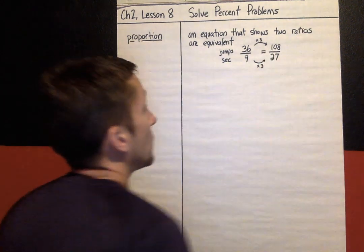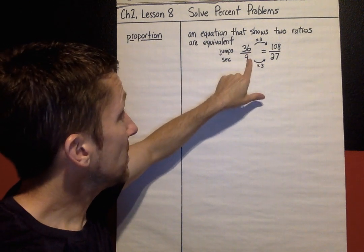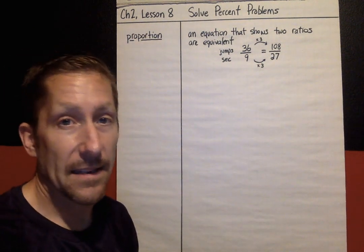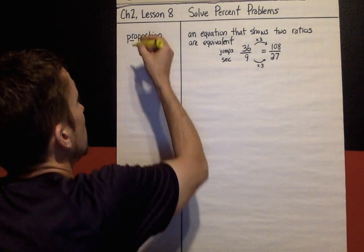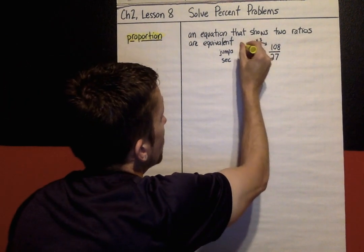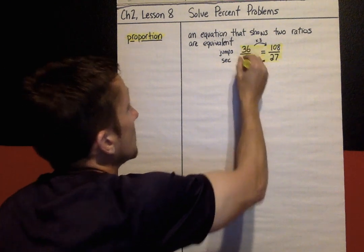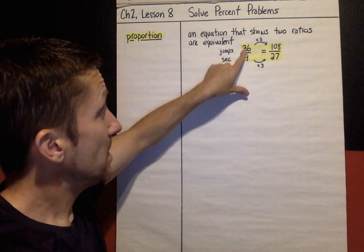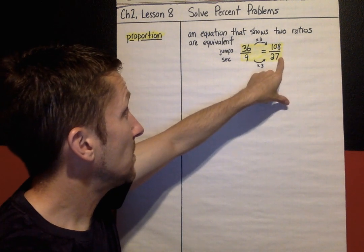And these are equivalent ratios. This thing right here is a proportion. It is showing that a 36 to 9 ratio is equal to 108 jumps in 27 seconds. Those ratios are equal. So to show a proportion, I'm going to highlight this whole thing.